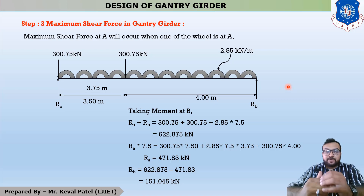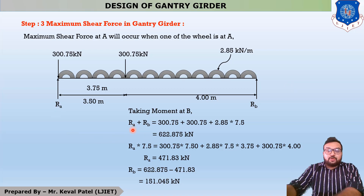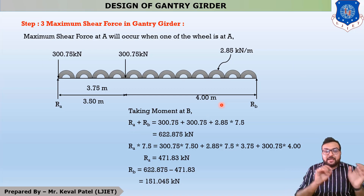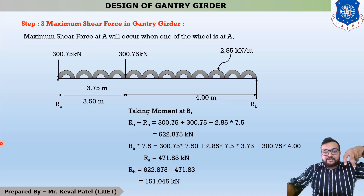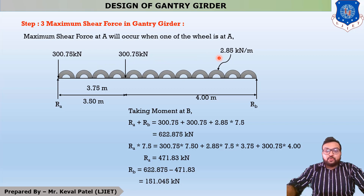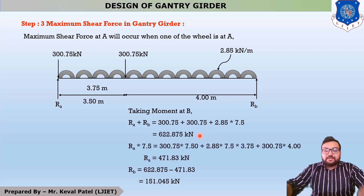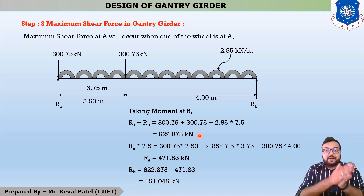We will calculate the maximum reaction generated on the gantry girder. Your upward force is equal to downward force. The upward forces are RA and RB. The downward forces are two point loads of 300.75 kilonewtons each (the wheel loads), plus the UDL: 2.85 into 7.5. After putting in all values, you will get 622.875 kilonewtons. Now you have to find out either RA or RB.